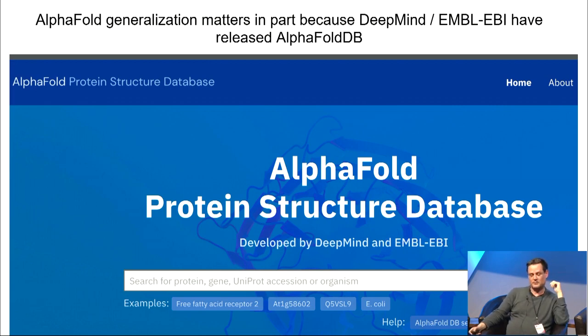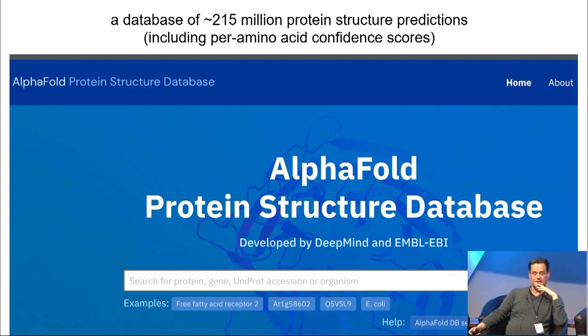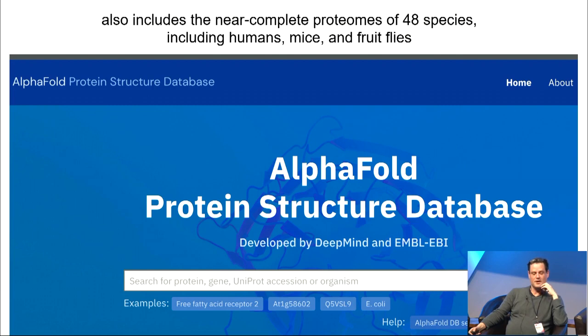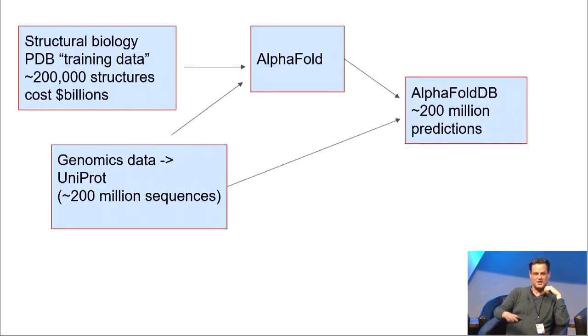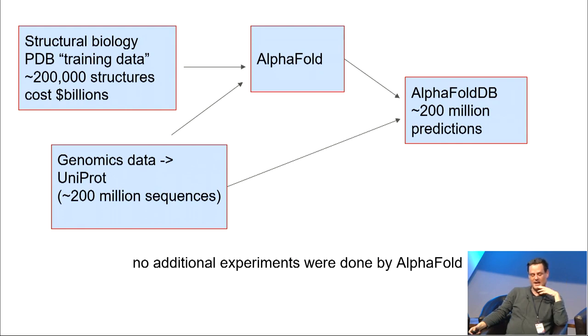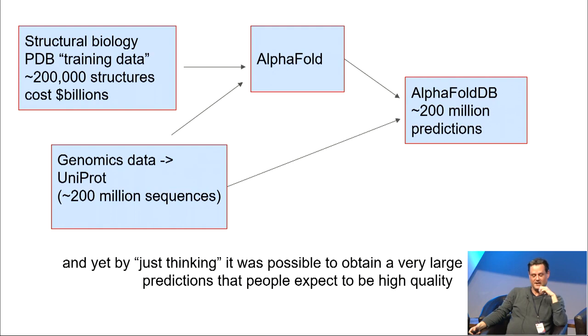Part of the reason it matters, well, there are many reasons it matters. One reason is DeepMind and EMBL released AlphaFold DB. This is a database of 215 million protein structure predictions, including the confidence scores. It also includes the near-complete proteomes of 48 species, including humans, mice, fruit flies, and many of the other usual suspects. So sort of the picture you can have, it's a little bit cheap to say, but in some sense you can almost view a lot of this, the gathering of the PDB as really having been gathering training data for these machine learning systems. You kind of get this amazing thousand-fold increase in structures. Of course, you don't necessarily believe them, or to what extent you should believe them is still a little up in the air. It is remarkable. No additional experiments were done by AlphaFold, no additional data were taken, and yet just by thinking, it was possible to obtain a very large number of additional predictions that people expect to mostly be very high quality.